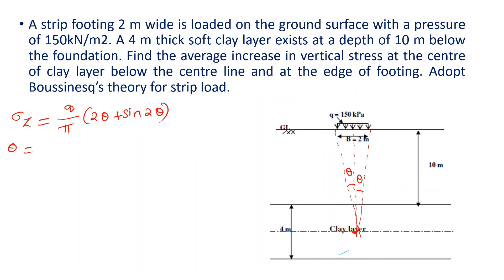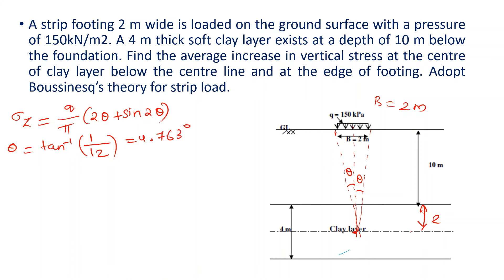For the center line calculation, θ = tan⁻¹(opposite/adjacent). The opposite side is 5 meters (half the strip width) and the adjacent side is the total depth of 12 meters (10m to top of clay + 2m to center of clay layer). Therefore θ = 4.763 degrees.